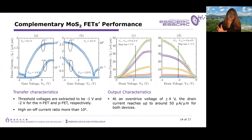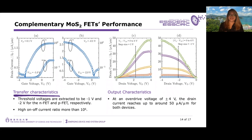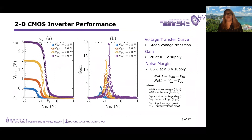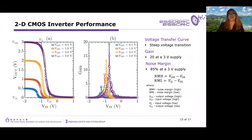Looking at the transfer characteristics of the complementary devices, the threshold voltage of the NFET is extracted to be around minus one volt, while that for the PFET is around minus two volts. A high on-off current ratio greater than 10^6 is also observed. As for the output characteristics, at an overdrive voltage of ±4 V, the drain current reaches up to 50 μA/μm for both devices. As we are able to match the current drive of the complementary devices, we obtain a steep voltage transition spanning almost the entire supply voltage as shown in the measured voltage transfer curves. A gain of 20 and a noise margin of 85% at a 3 V supply are also achieved.